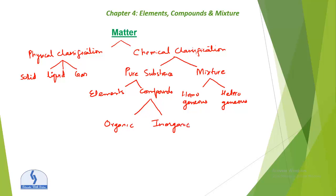So this is all about matter. It is classified into physical and chemical classification. In physical classification we have solid, liquid and gas. In chemical classification we have pure substance and mixture. Mixture can be homogeneous or heterogeneous. Pure substance gives us elements and compounds, and compounds can be organic and inorganic.